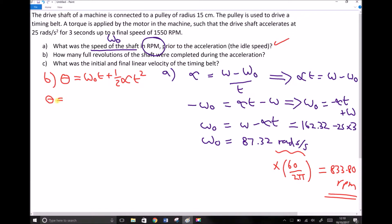So theta equals omega zero. We must use omega zero in rads per second, so 87.32 times our time, which is given in the question as three seconds plus a half times alpha, which is given in the question as 25 rads per second squared times our time of three seconds squared. And running that through our calculator gives us a value of theta equal to 374.5 radians.